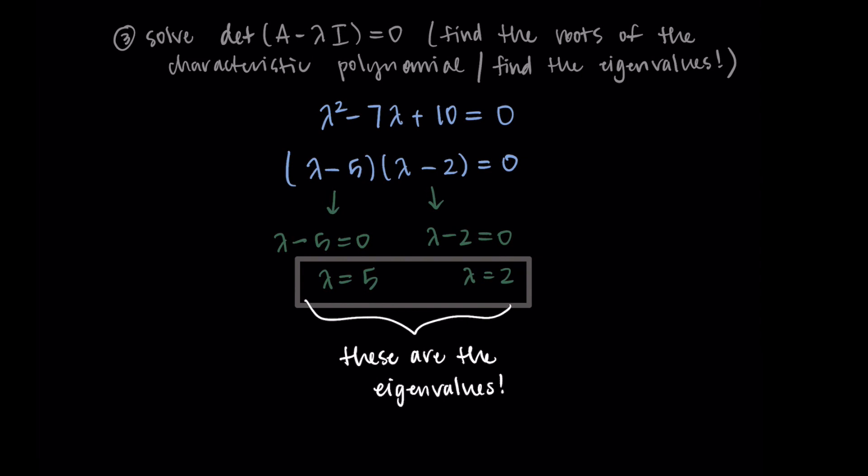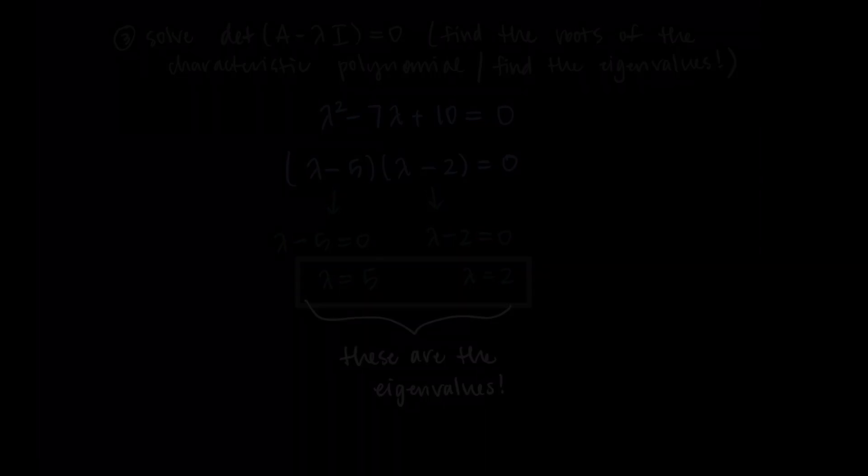That's it for this example. In the next video, we do two more examples — another 2×2 matrix and then a 3×3 matrix — to find the eigenvalues. Thanks so much for watching and I'll talk to you in the next one.